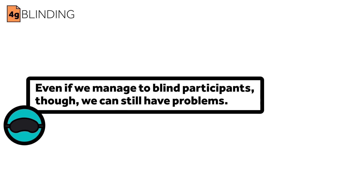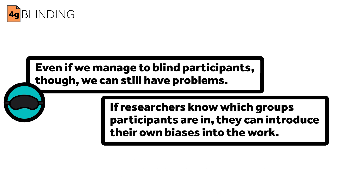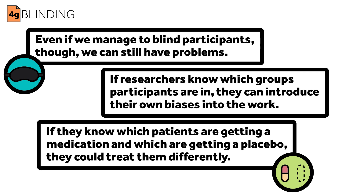Even if we manage to blind participants, though, we can still have problems. If researchers know which group participants are in, they can introduce their own biases into the work. If they know which patients are getting a medication and which are getting a placebo, they could treat them differently — maybe they will be nicer to those receiving the medication, and maybe that will make them report outcomes differently.